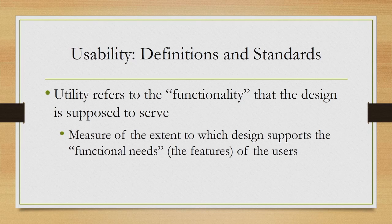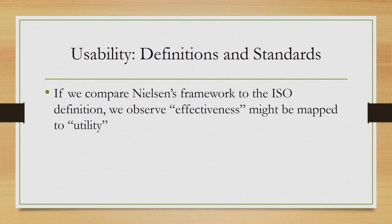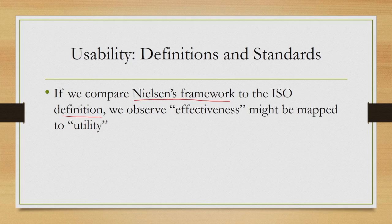The final quality attribute is satisfaction — subjective or user satisfaction — that is, how pleasant it is to use the design. Those are the five quality attributes for usability. On the other hand, for utility — the other attribute of a system according to Nielsen — it refers to the functionality that the design is supposed to serve. It is a measure of the extent to which a design supports the functional needs of the users, or in other words how many features it supports that actually serve the functional needs of the user. If we compare Nielsen's framework to the ISO definition, we observe that effectiveness might be mapped to utility.